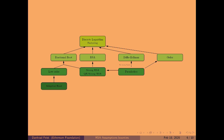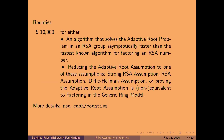The adaptive root assumption implies the low-order assumption, which is the one that the Pietrzak construction is based on. We're getting a more extensive zoo of RSA assumptions. The adaptive root assumption seems a bit exposed because it's not implied by any of the others — the others have some relations between them. So we decided we should start giving this a bit more scrutiny.